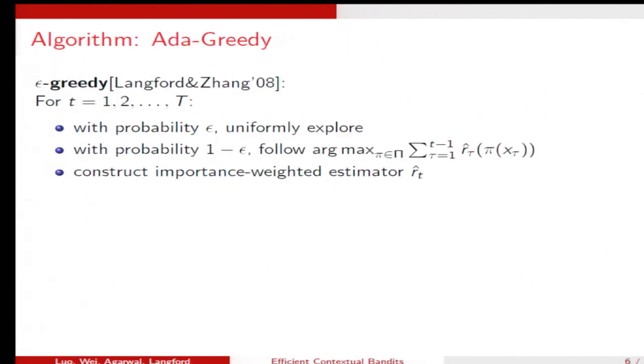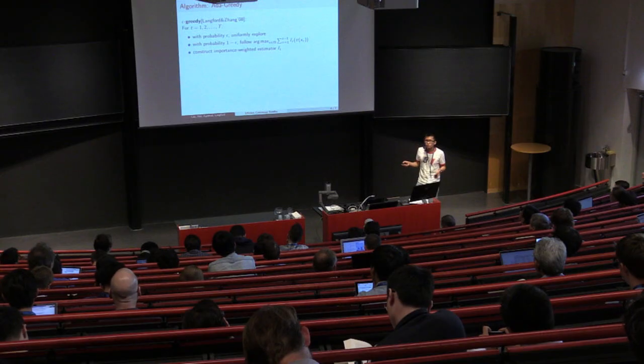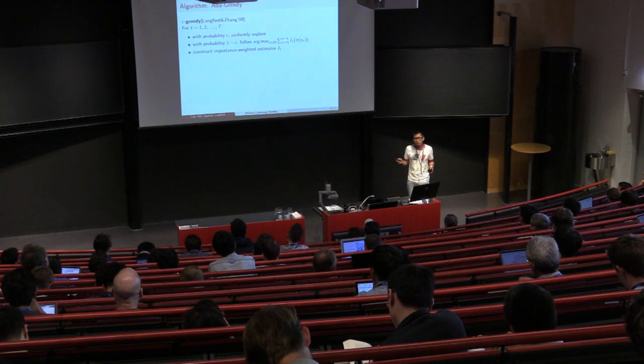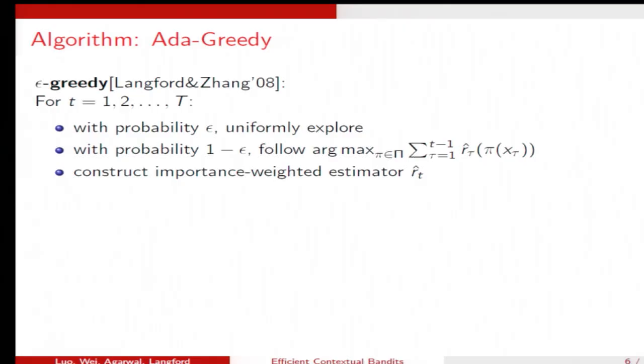Let me briefly go over the algorithm. Our design principle is like this. We pick an oracle-efficient algorithm that works for IID setting. We try to run it. And then if we detect some non-stationary narrative, that means the distribution is no longer IID, then we rerun the whole algorithm.